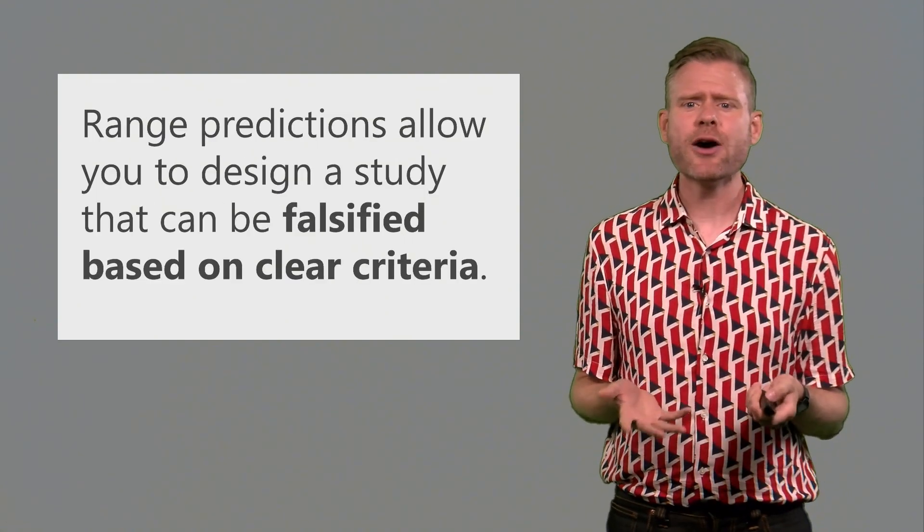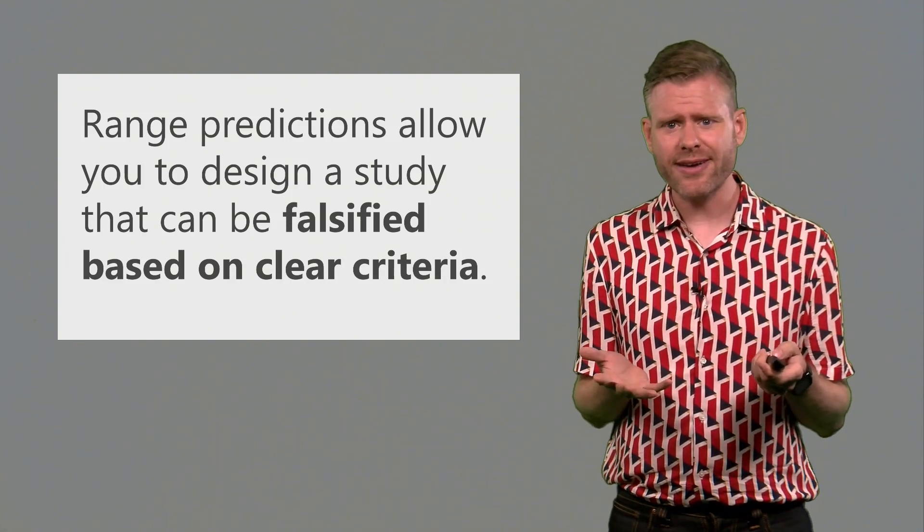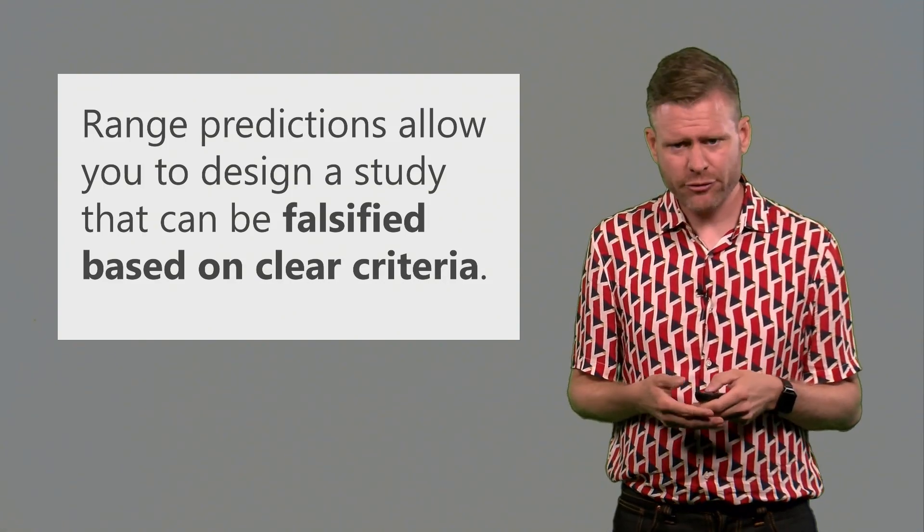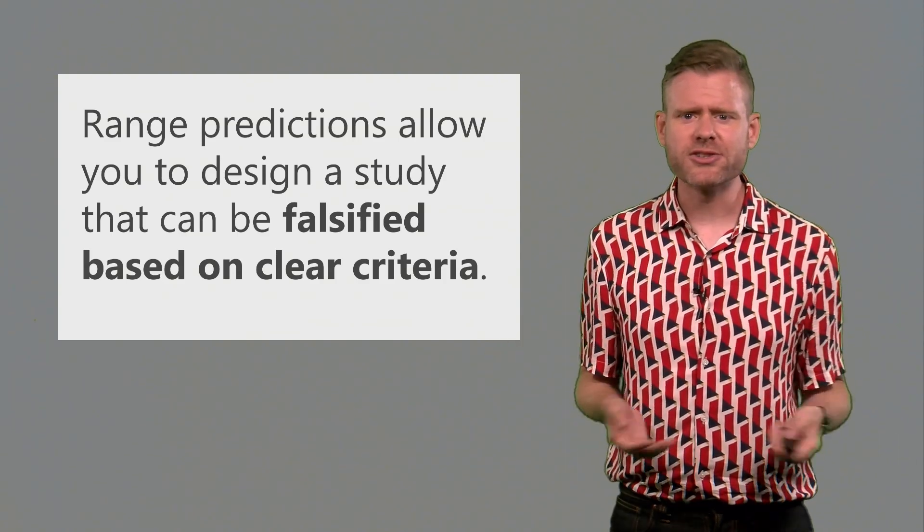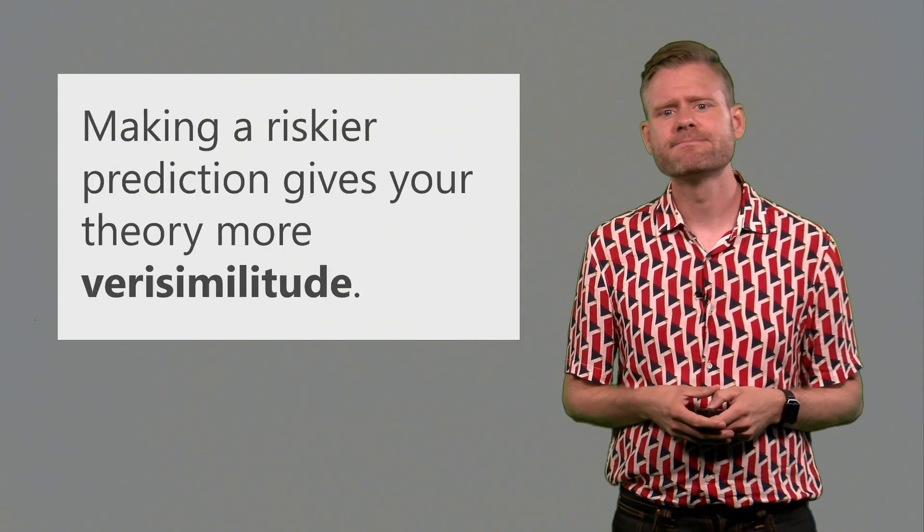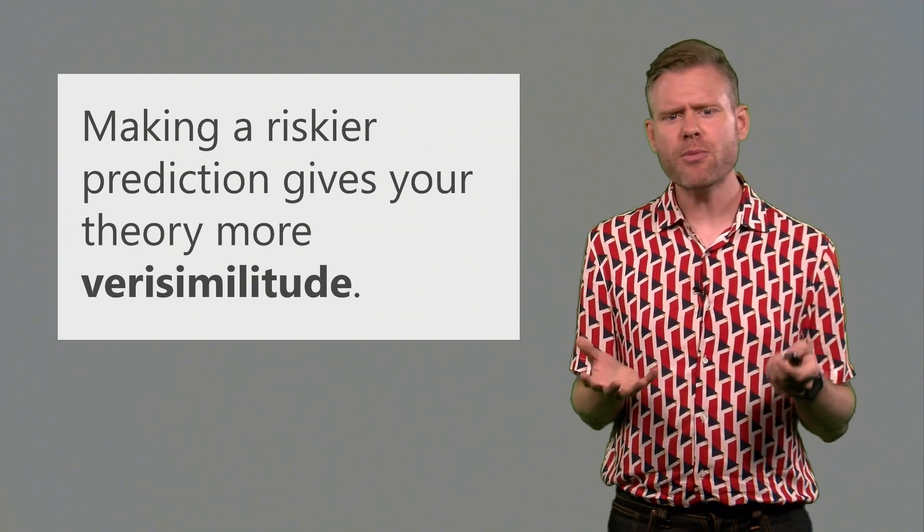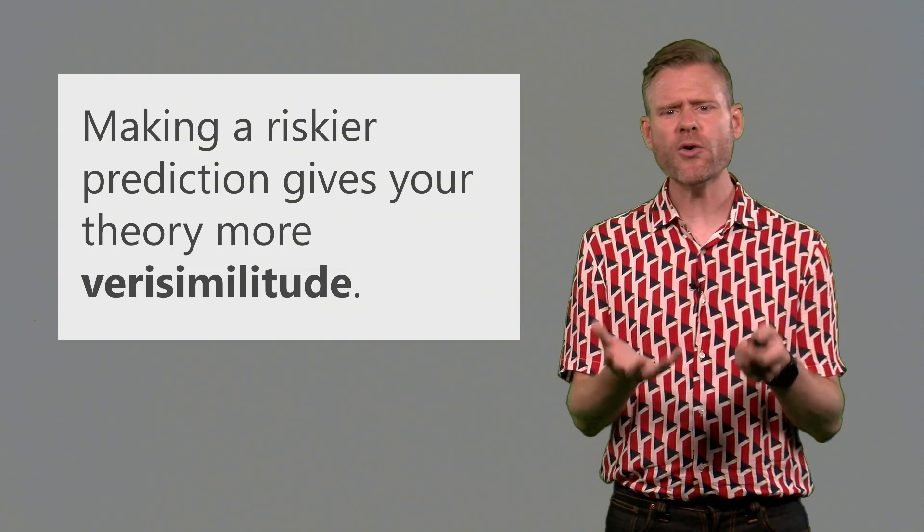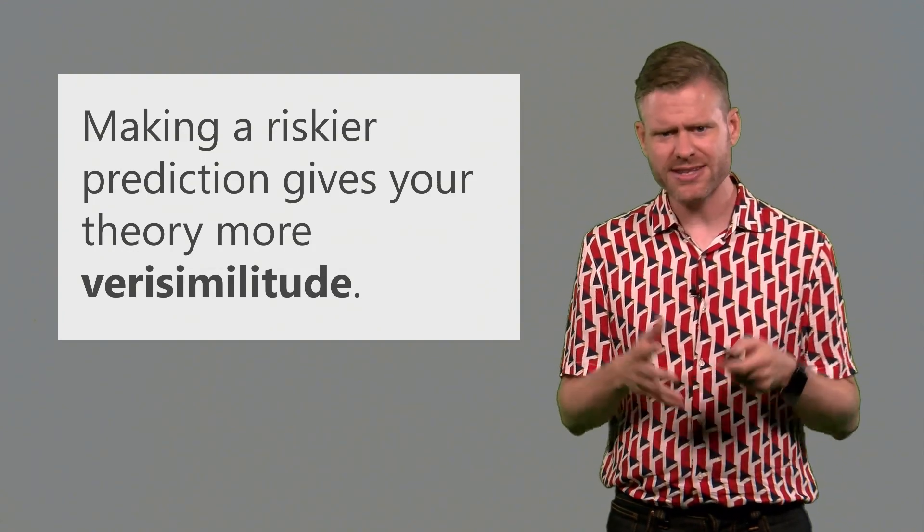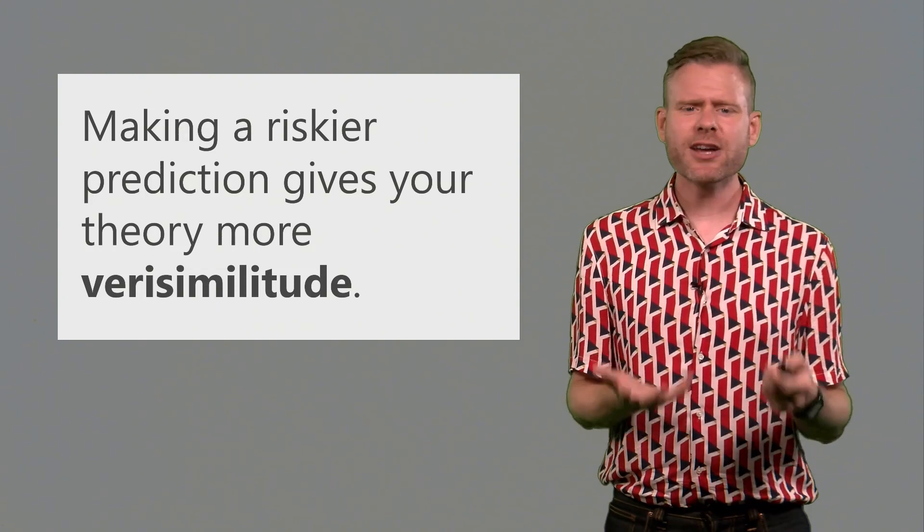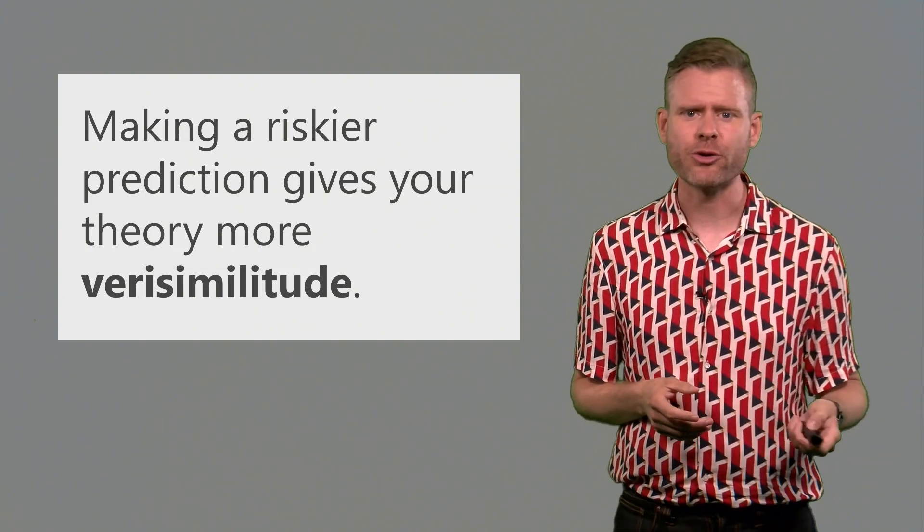Range predictions also allow you to design a study that can be falsified on clear criteria. If you observe data that falls outside of the range that you are predicting, then your prediction is falsified. So making a riskier prediction gives your theory more verisimilitude. There were more ways in which you could be wrong. And if you nevertheless pass this risky test, we are quite impressed and we think that your theory has something going for it.